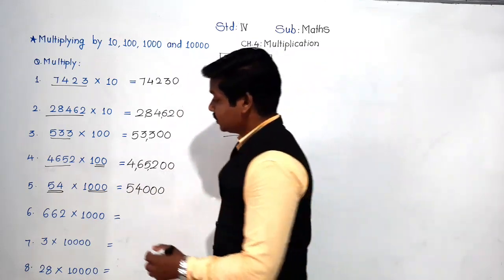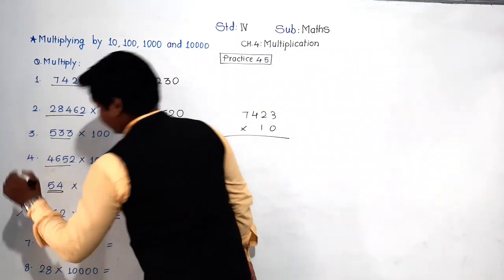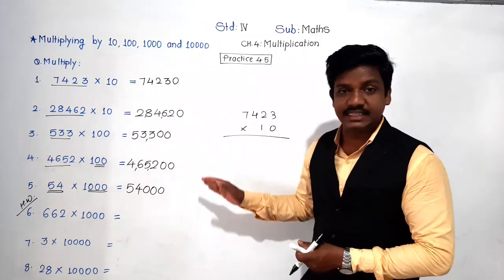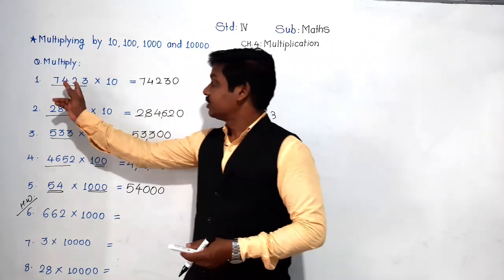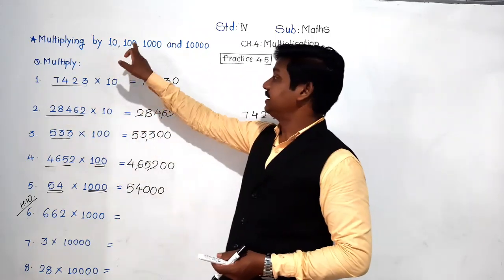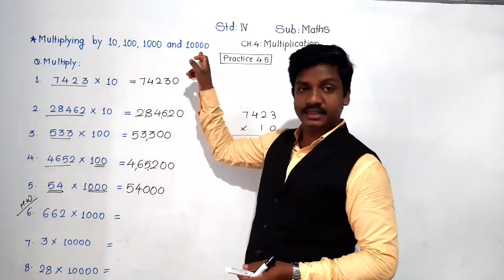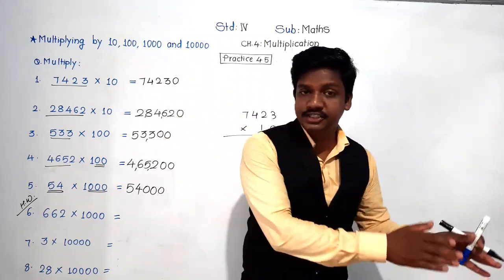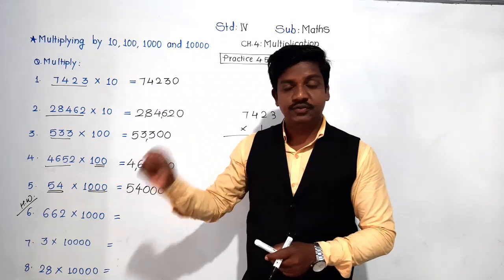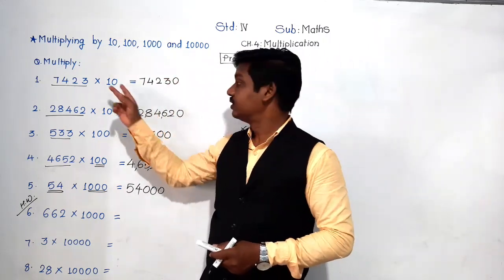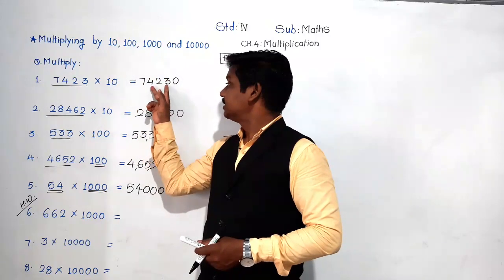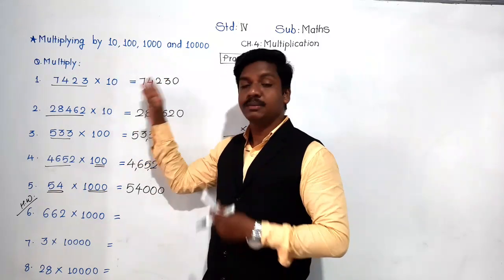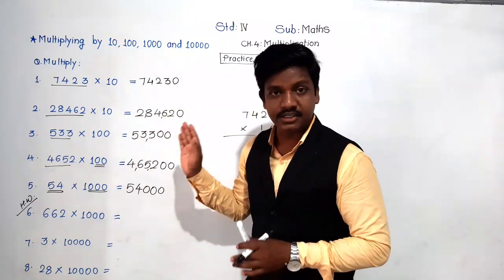I hope you have understood. It's very easy. Once again: when there is multiplication by 10, 100, 1000, or 10000, do not multiply traditionally. Within a fraction of a second you will get the answer. Write the number as it is, and whatever number of zeros the multiplier has, put those zeros at the end. Understood?